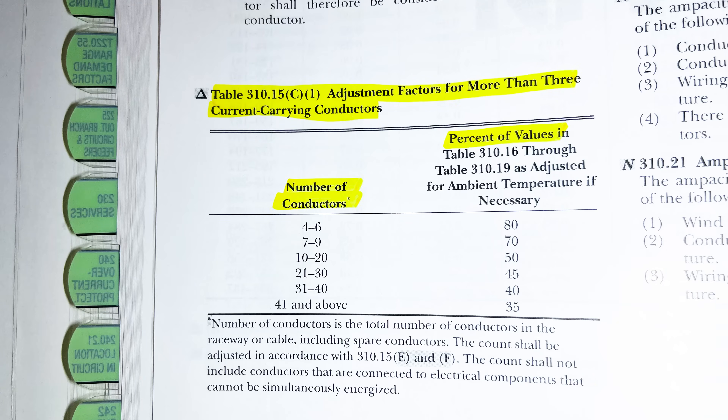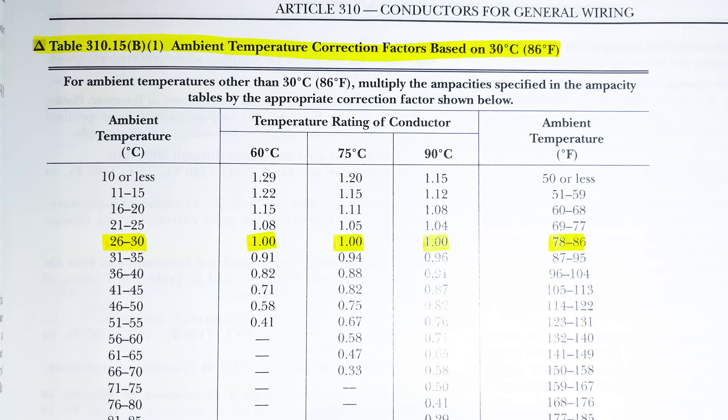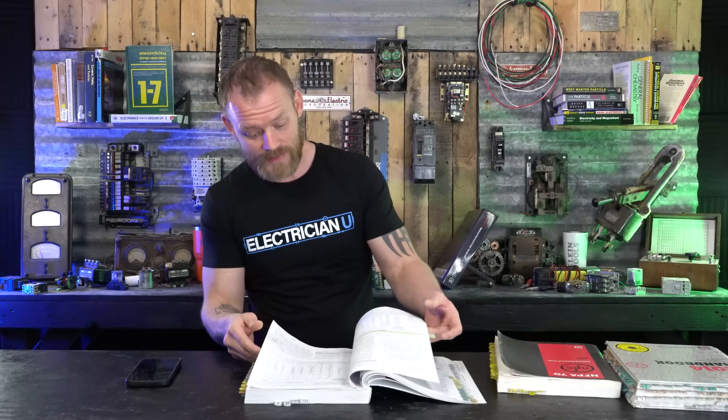Flipping back one page we have table 310.15(C)(1), adjustment factors for more than three current-carrying conductors. I highlight that one because you use it a lot — however many current-carrying conductors you have in a conduit, you may have to derate the ampacity. I even write in there 'does not apply to nipples' with '24 inches' in parentheses as a reminder. Then one more page back we have tables 310.15(B)(2) and (B)(1) — I highlight those titles so I know they are my ambient temperature correction factor tables.